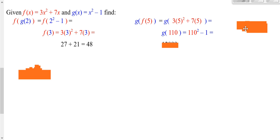So, I've got to plug that in there. Take 110 squared minus 1 and I get 12,099.